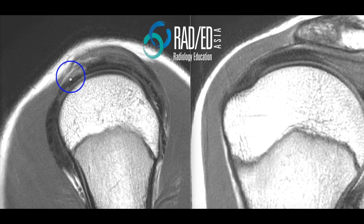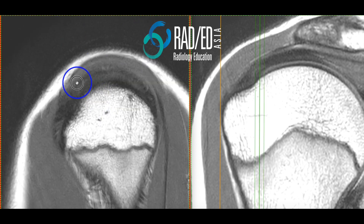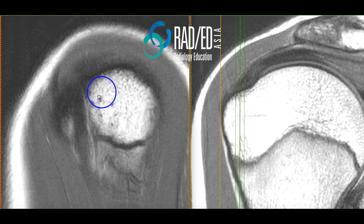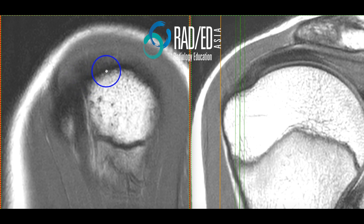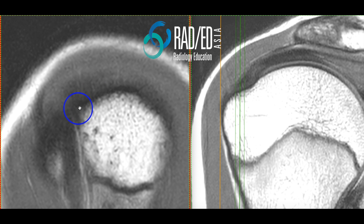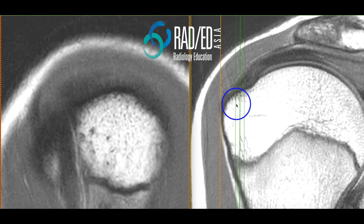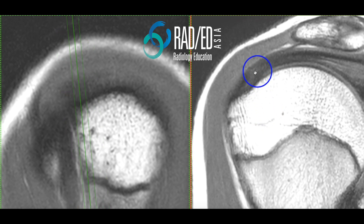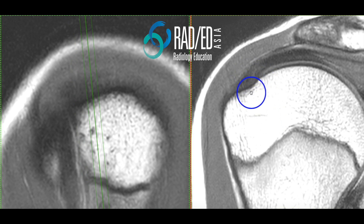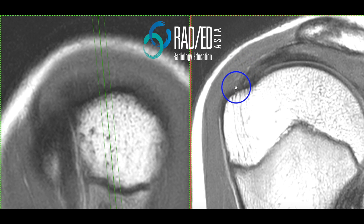So what we need to do is use the coronal images to cross-reference. We find this image where we have the biceps tendon, the posterior margin of the bicipital groove, and the anterior-most fibers of supraspinatus — and here's our horizontal facet. We know from the anatomy that supraspinatus inserts onto this horizontal facet. Cross-referencing: horizontal facet — we're in supraspinatus. Keep coming back, still in supraspinatus, moving towards the posterior margin of supraspinatus now.